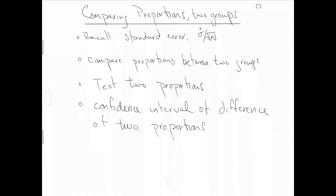In this video, we're going to talk about comparing proportions between two groups. We'll start by recollecting the definition of the standard error, then set up a scenario where comparing proportions between two groups would be informative. We'll specify how to create a hypothesis test comparing two proportions, talk about a confidence interval for the difference of two proportions, and conclude with an example in R.